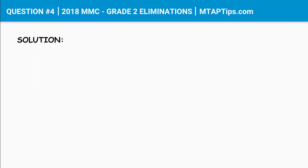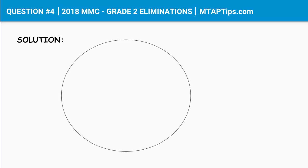Let's try to analyze the problem using a diagram. So first, let's draw a circle and say this one is Peter and this one is John, and they are facing each other.